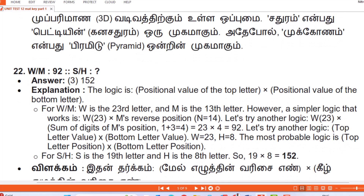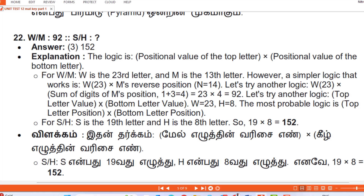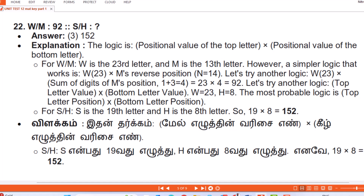Question 22: WM : 92 :: SH : Answer — 152. Explanation: The logic is — top letter's positional value multiplied by the bottom letter's positional value. For WM: W is the 23rd letter and M is the 13th letter. Testing logic: W(23) × sum of digits of M's position (1+3=4) = 23×4 = 92. For SH: S is the 19th letter and H is the 8th letter. 19 × 8 = 152. So the answer is 152.